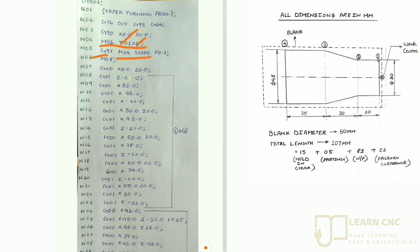So G00 X0 Z0, it is the offset point or the reference point. G01 Z0 minus 2, we are starting the facing operation here. And G01 X52.0, this will finish the facing operation.